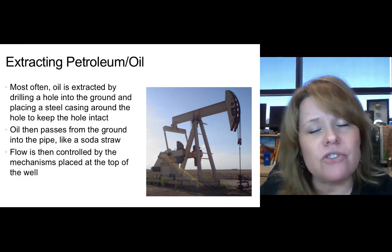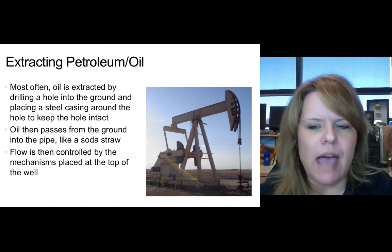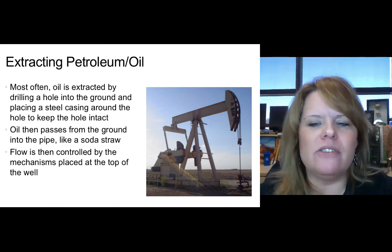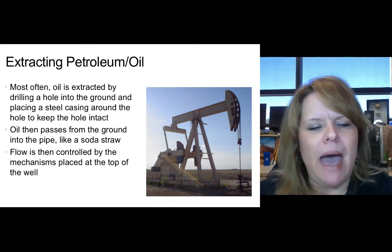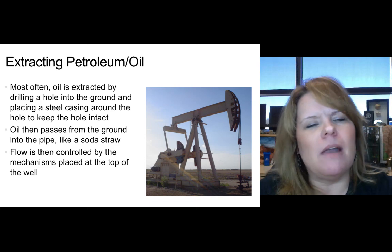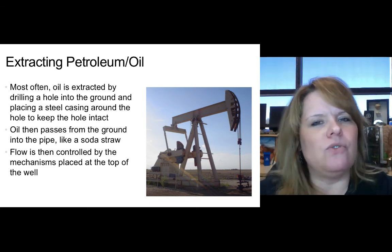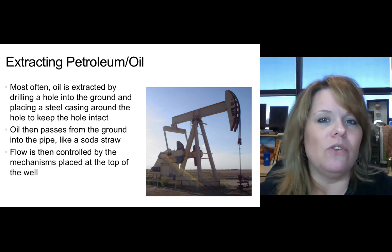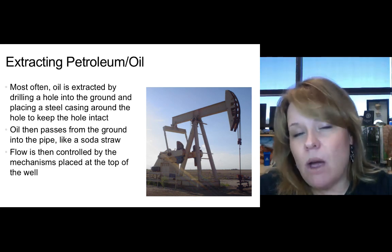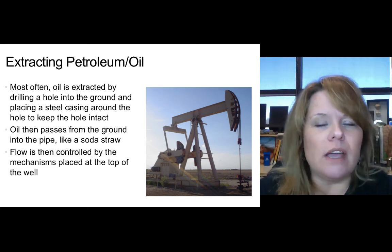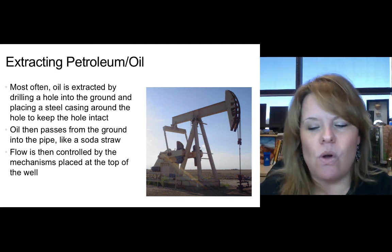Most often oil is extracted by drilling a hole into the ground and placing a steel casing around the hole to keep it intact. Oil then passes from the ground into the pipe like a soda straw. Flow is then controlled by mechanisms placed on top of the well to control the speed and the amount of barrels collected per day. Some oil rigs produce quite a bit of oil and some do not.